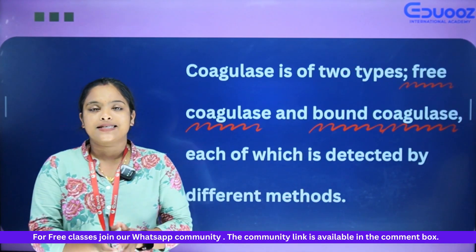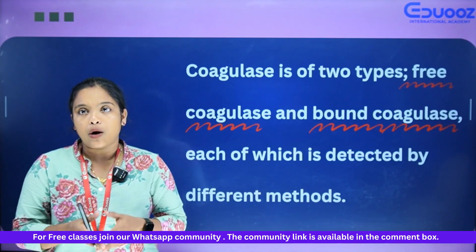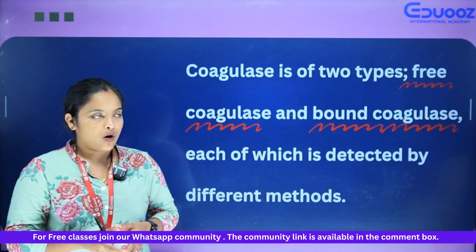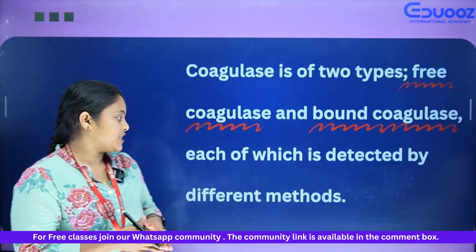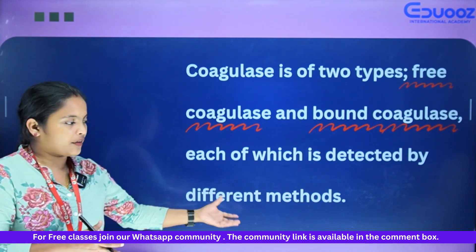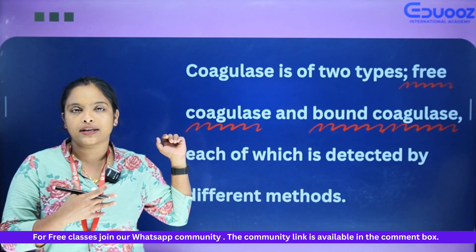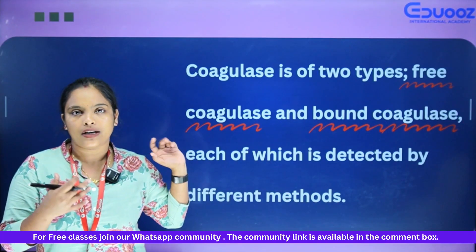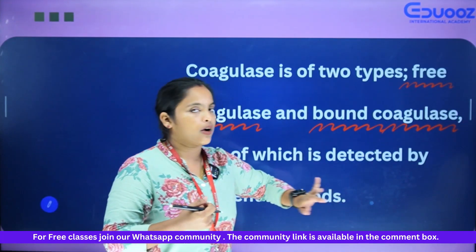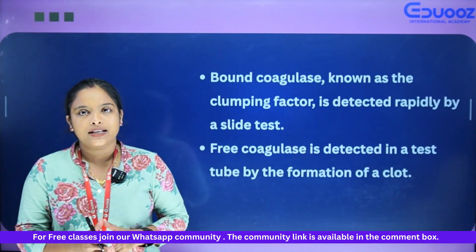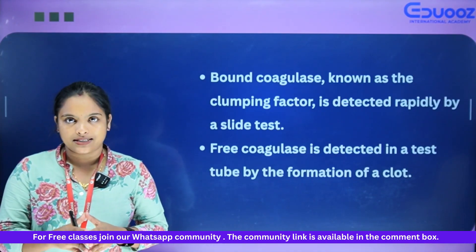Coagulase is tested in two types: free coagulase and bound coagulase. Each of which is detected by different methods. Free coagulase and bound coagulase are detected by different methods.